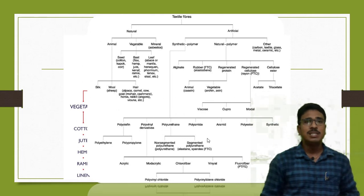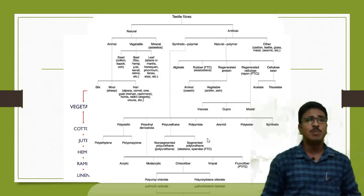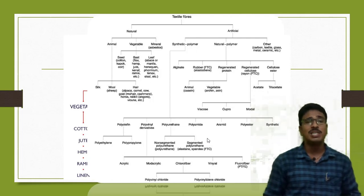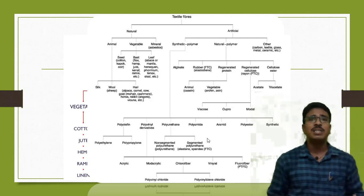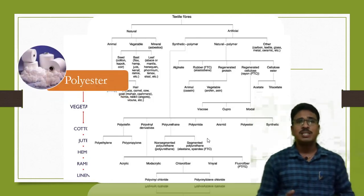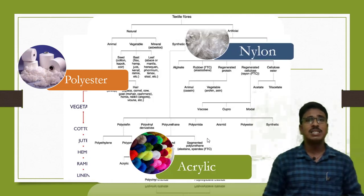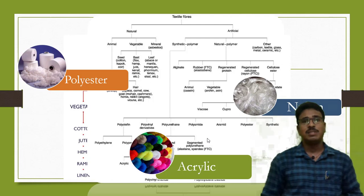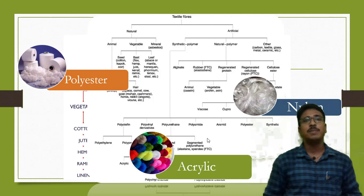Synthetic fibers are classified into polyolefins, polyvinyl derivatives, polyurethanes, polyamides, and polyesters, among others — broadly classified depending upon the polymer present. You can see images of polyester, nylon, and acrylic fibers. This covers the classification of man-made fibers.